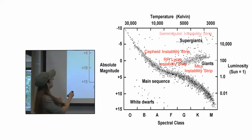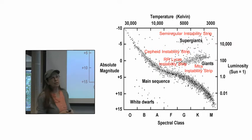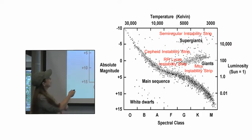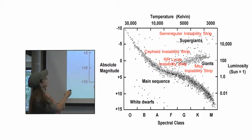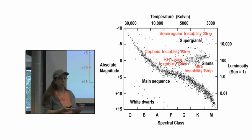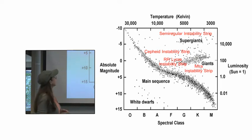Up here, we have the semi-regular instability strip, where even more massive stars are transitioning over. They might miss the Cepheid instability strip, but they will go through a semi-regular instability region before they go supernova.